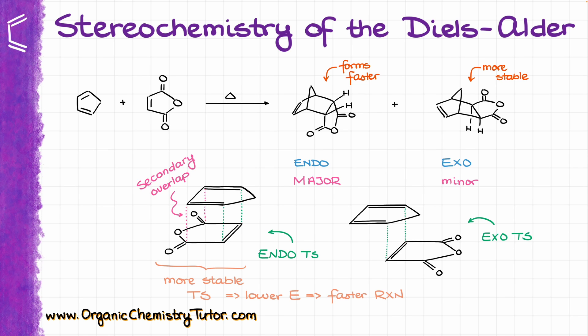From the kinetic perspective, this means that the Diels-Alder reaction favors the kinetic product, aka the one that forms the fastest. Or in other words, we can say that the Diels-Alder reaction is kinetically controlled.